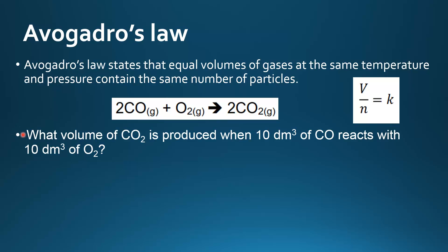Next we'll try an example. What volume of carbon dioxide is produced when 10 decimetres cubed of carbon monoxide reacts with 10 decimetres cubed of oxygen gas? Here's our balanced equation: two moles of carbon monoxide react with one mole of oxygen to form two moles of carbon dioxide.